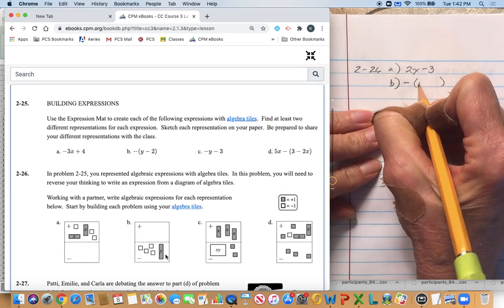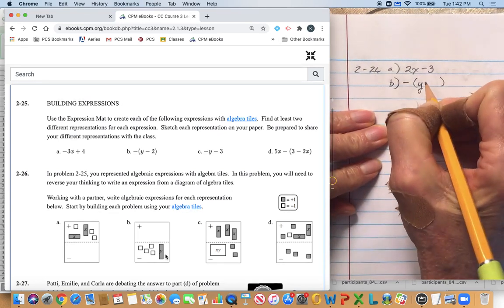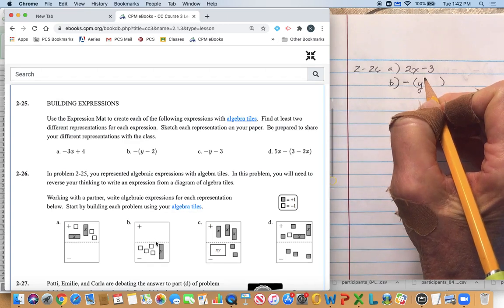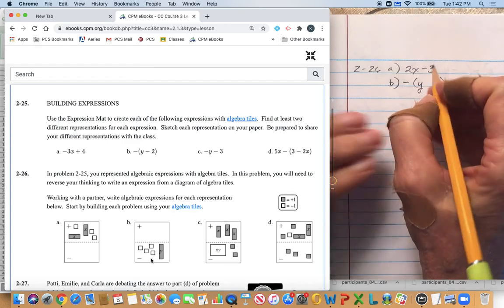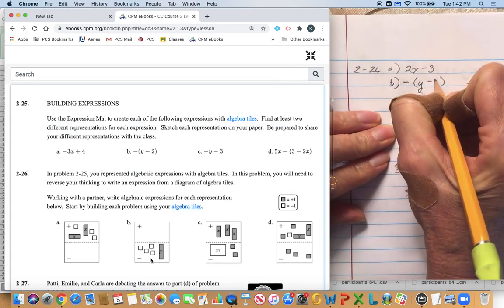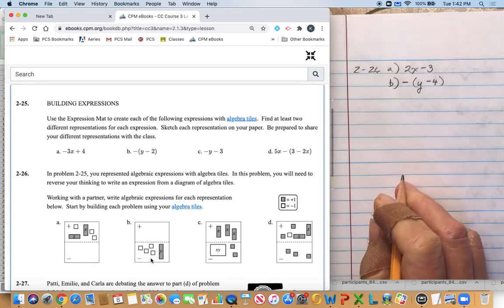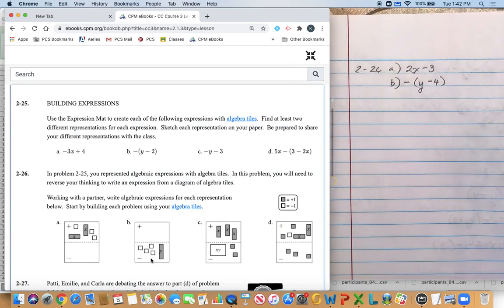So that's a positive Y, so that's just Y, and then I've got one, two, three, four negative ones. So inside the parentheses that's negative one. Okay, so that's B.